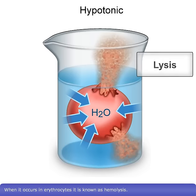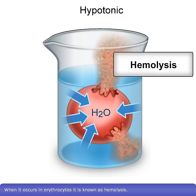This rupturing is known as lysis. When it occurs in erythrocytes, it is known as hemolysis.